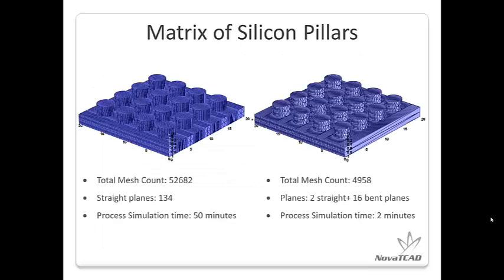This is a typical example of bent versus straight planes. To build a structure with a 4x4 silicon pillar matrix, using the straight plane method requires over 52,000 mesh points, 134 straight Z planes, and costs 50 minutes to simulate. By comparison, using bent planes requires less than 5,000 mesh points, and the process simulation time is dramatically reduced to just 2 minutes.